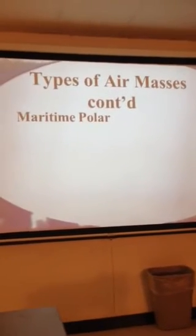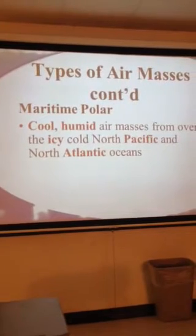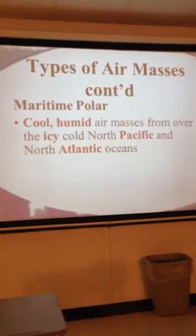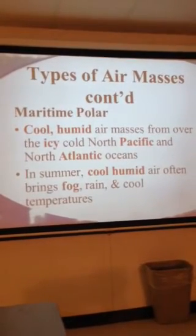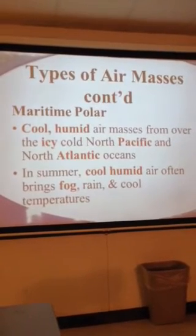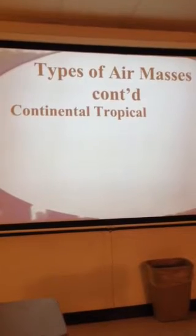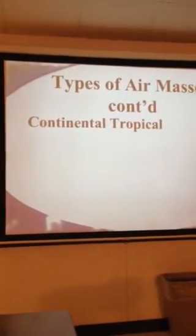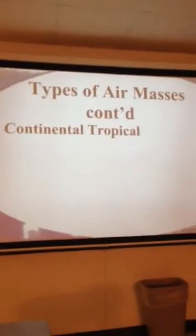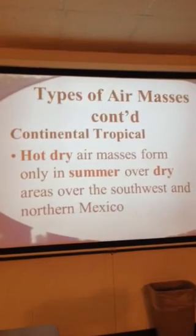The next air mass is maritime polar, which is a cool humid air mass that comes from a cold ocean. It forms over the icy cold North Pacific and North Atlantic oceans, the two that affect the United States. In summer it brings cool humid air and often also brings fog, rain, and cool temperatures. Continental tropical is the air mass that comes from land and from a hot place — for the United States this would come from Mexico. It is a hot dry air mass that forms only in summer over the dry areas of southwest and northern Mexico.